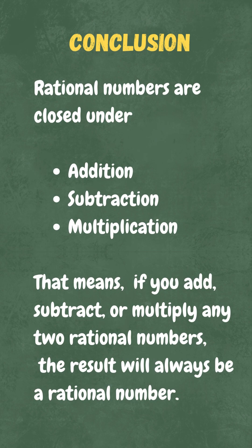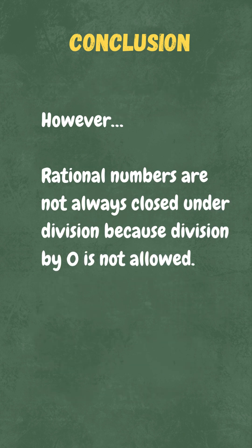Final conclusion: So, rational numbers are closed under addition, closed under subtraction, closed under multiplication, but not always closed under division, because division by 0 is not allowed. Now you get it. That's the closure property for rational numbers.